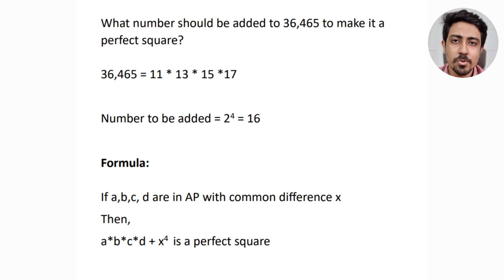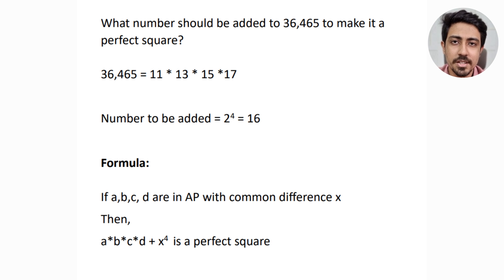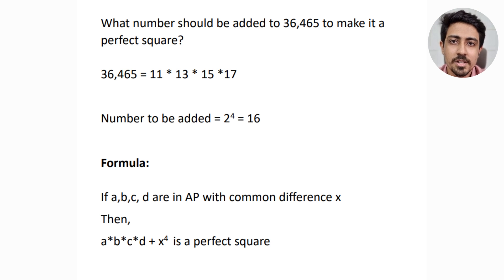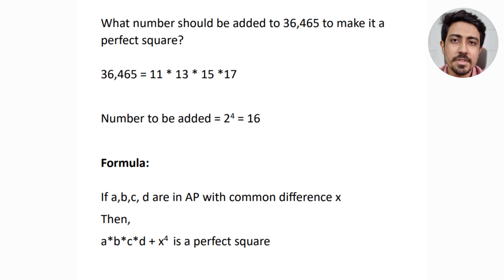The next shortcut is also on AP-GP. Suppose the question is: what number should be added to 36465 to make it a perfect square? Without this shortcut you'd use options and a calculator. But now CAT gives type-in answers, so you need the shortcut. Notice that 36465 = 11 × 13 × 15 × 17, which are four numbers in AP with common difference 2.